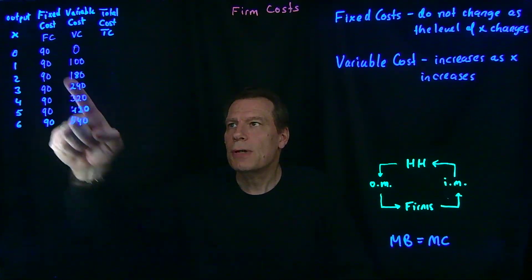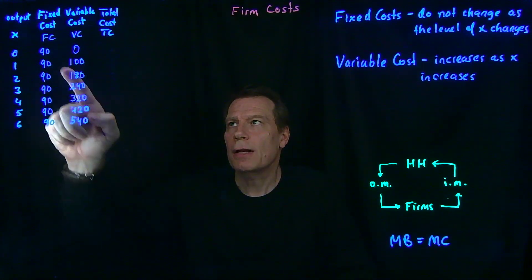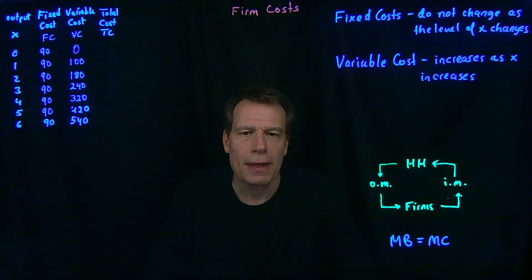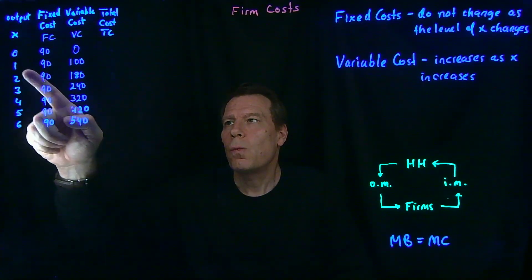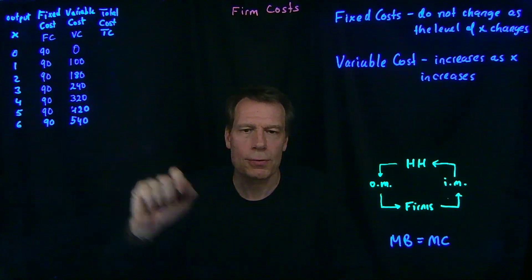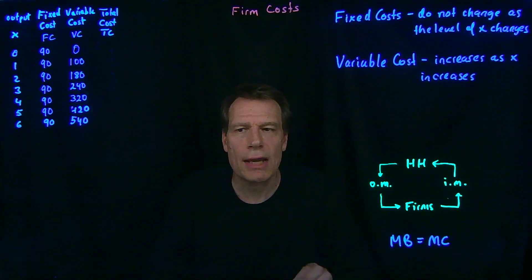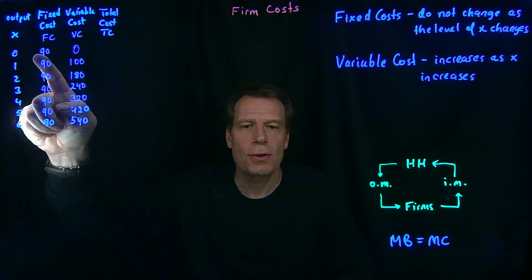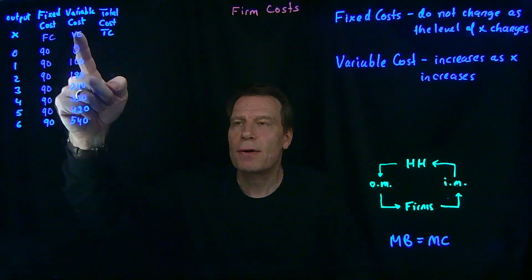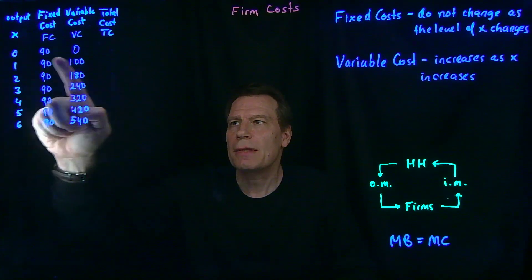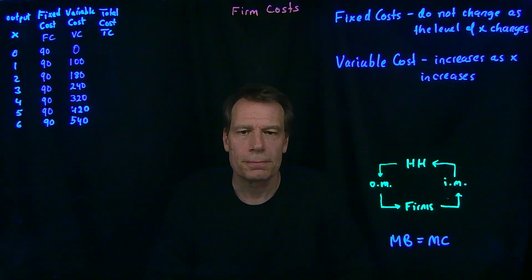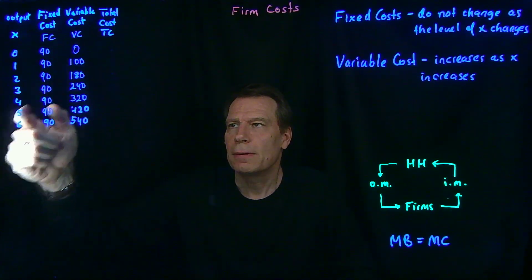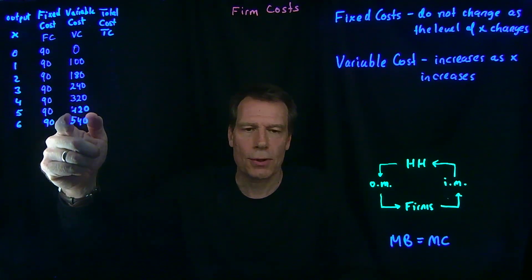In these two columns, we've put down some numbers. In the first column, we put down the fixed cost that this firm faces. And once you know one row for this column, you know all the rows, because fixed costs don't change as output increases. So we've set the fixed cost to 90. Then we have variable costs. When you produce nothing, the variable cost is zero — you don't have to hire any of those workers. But as you produce more, that variable cost is going up.